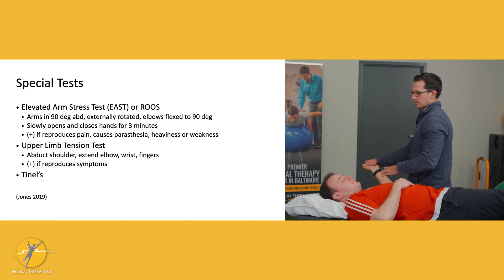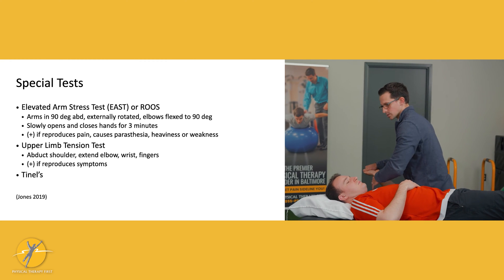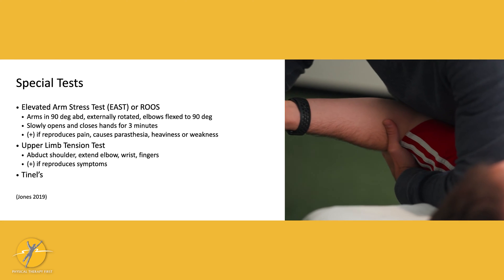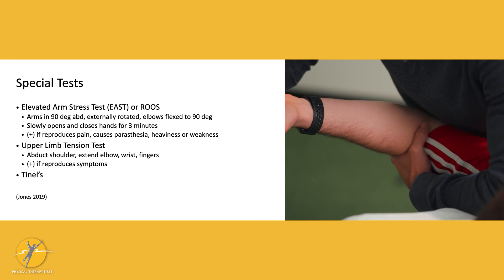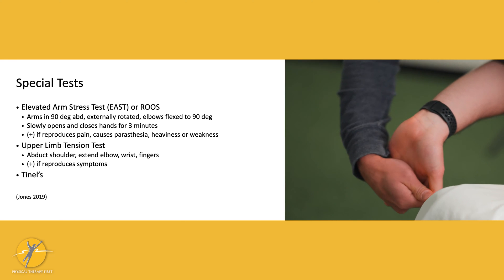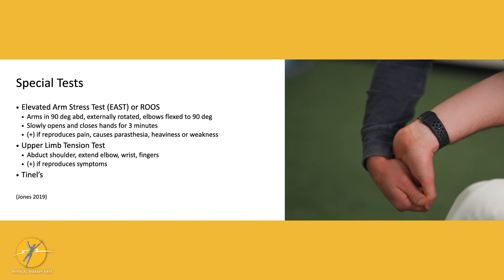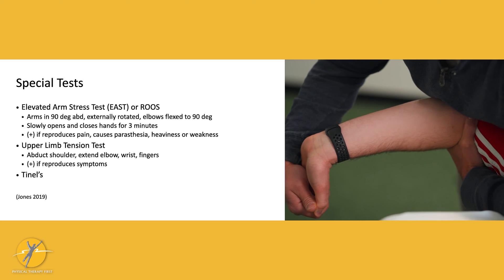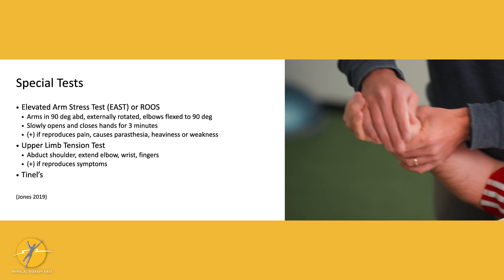A couple other special tests to look at are upper limb tension tests. To bias the median nerve, have the patient lying supine. Bring the arm up to about 90 degrees, depress the scapula a little bit, then fully extend the fingers, wrist, and thumb. Slowly extend the elbow and see if symptoms are reproduced. Compare to the other side to determine if one has more mobility.